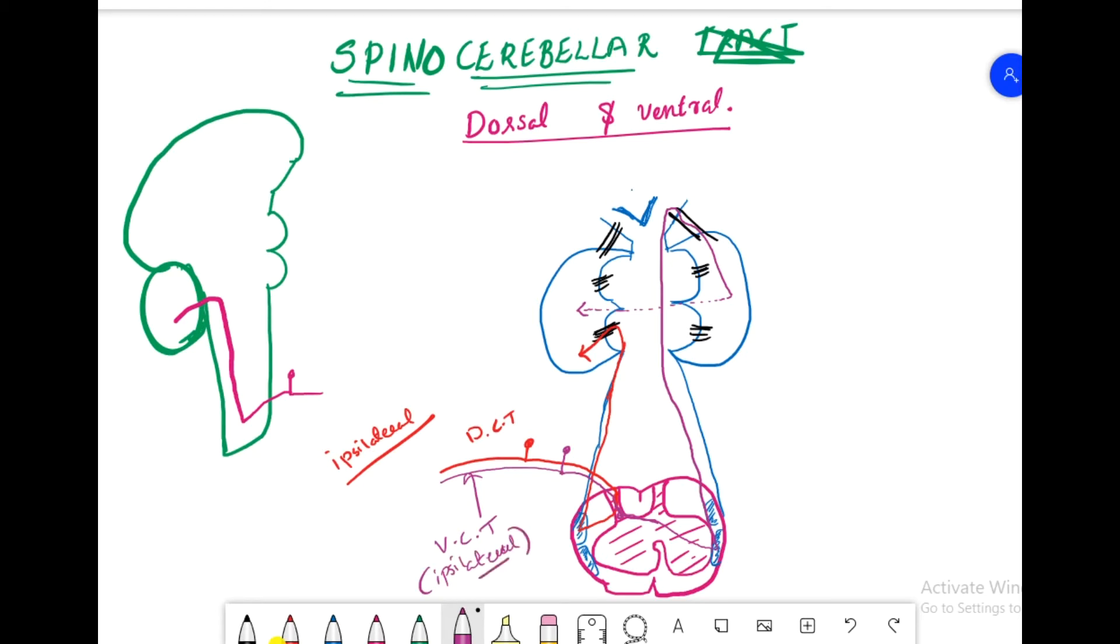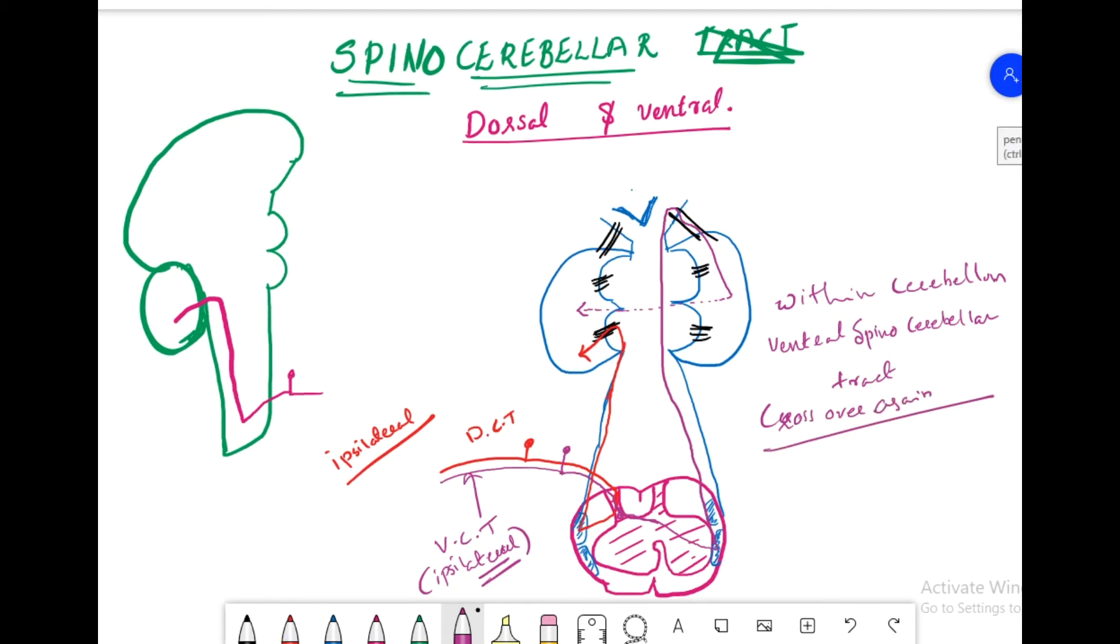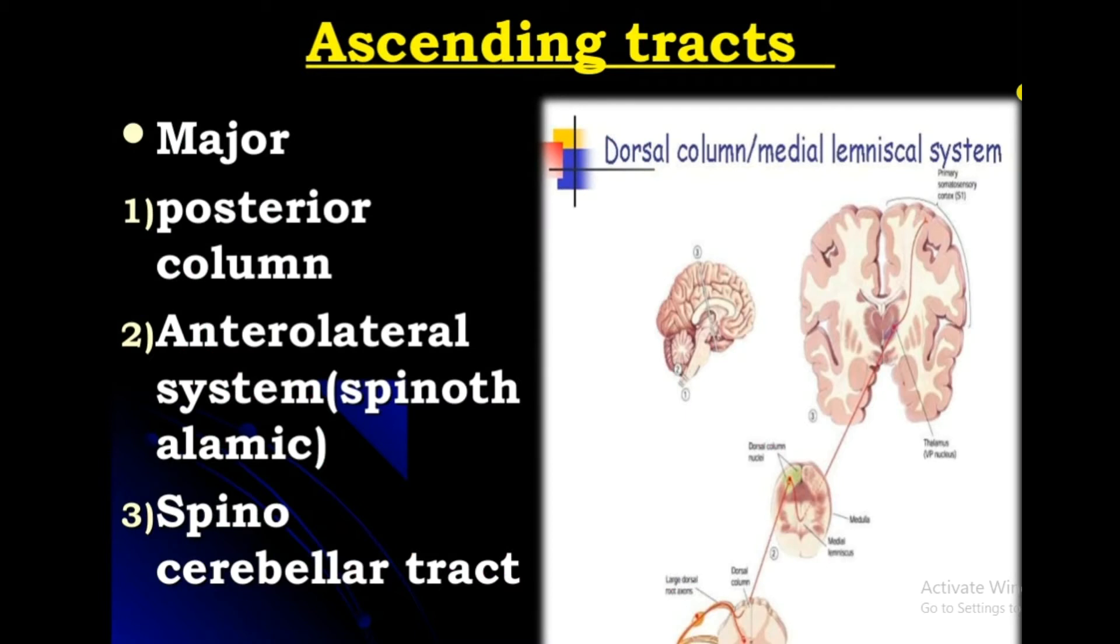Both ventral and dorsal carry ipsilateral side information, but the ventral cerebellar tract crosses over two times: within cerebellum, ventral spinocerebellar tract crosses over again.